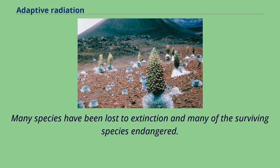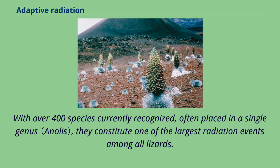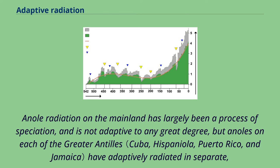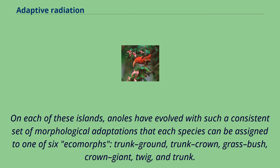Anole lizards are distributed broadly in the New World, from the southeastern U.S. to South America. With over 400 species currently recognized, often placed in a single genus, they constitute one of the largest radiation events among all lizards. Anole radiation on the mainland has largely been a process of speciation and is not adaptive to any great degree, but anoles on each of the Greater Antilles have adaptively radiated in separate, convergent ways. On each of these islands, anoles have evolved with such a consistent set of morphological adaptations that each species can be assigned to one of six ecomorphs: trunk-ground, trunk-crown, grass-bush, crown-giant, twig, and trunk.